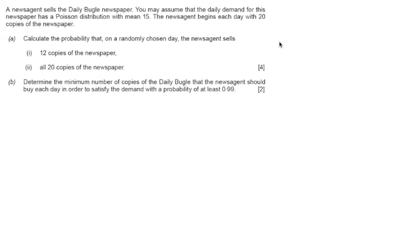In this question, we are told a newsagent sells a daily Bugle newspaper. You may assume that the daily demand for this newspaper has a Poisson distribution with mean 15. The newsagent begins each day with 20 copies of the newspaper. First of all, we want to calculate the probability that on a randomly chosen day, the newsagent sells exactly 12 copies of the newspaper.